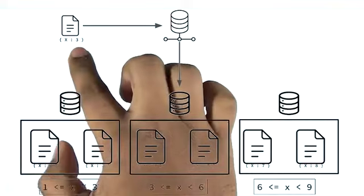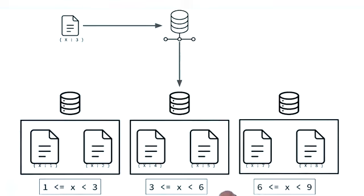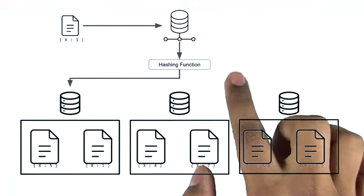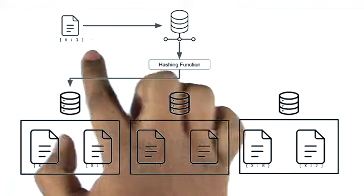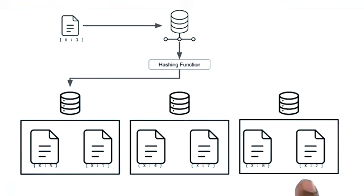Previously, if we had a document where, let's say, x was 3 and the shard key was on x, MongoDB would place it into the following chunk where the value of 3 falls into the chunk range. With a hashed shard key, MongoDB first hashes the value 3, then uses that hashed value to decide which chunk to place the document in.